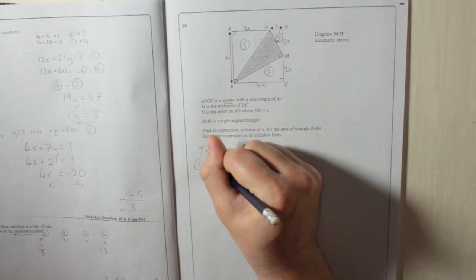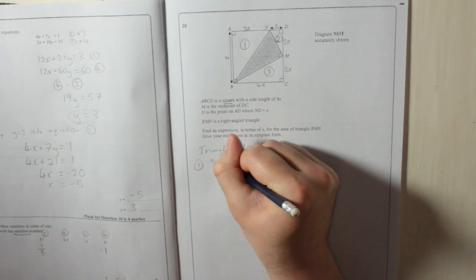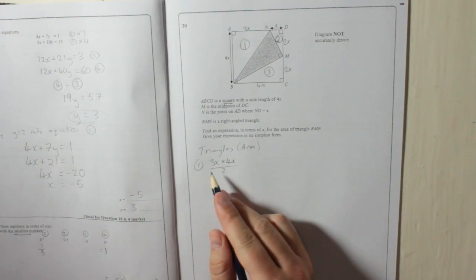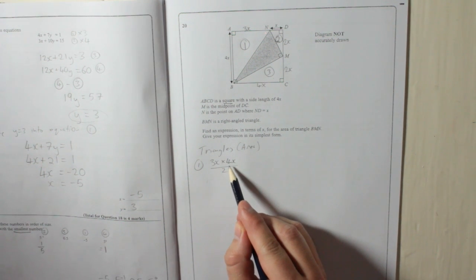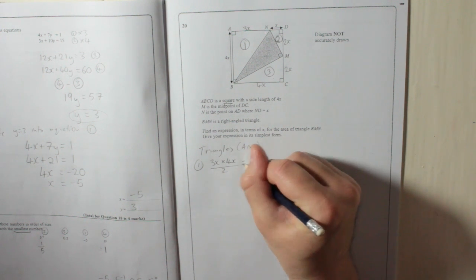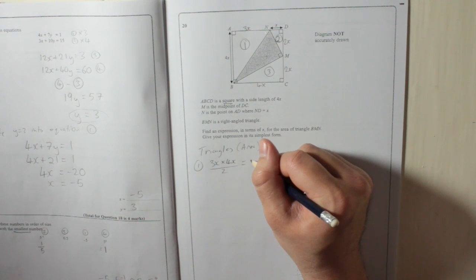So, 3 times 4 is 12. X times X is X squared. So, 12X squared divided by 2 is 6X squared.